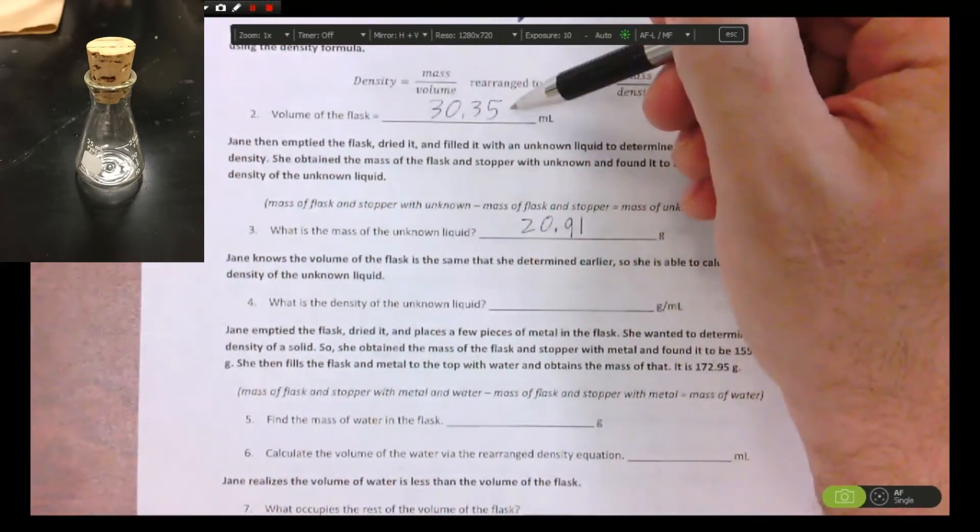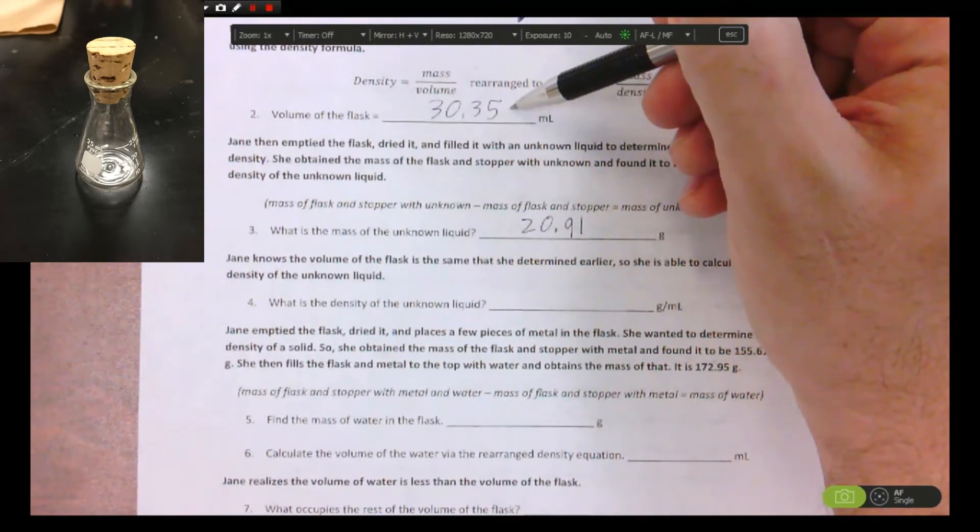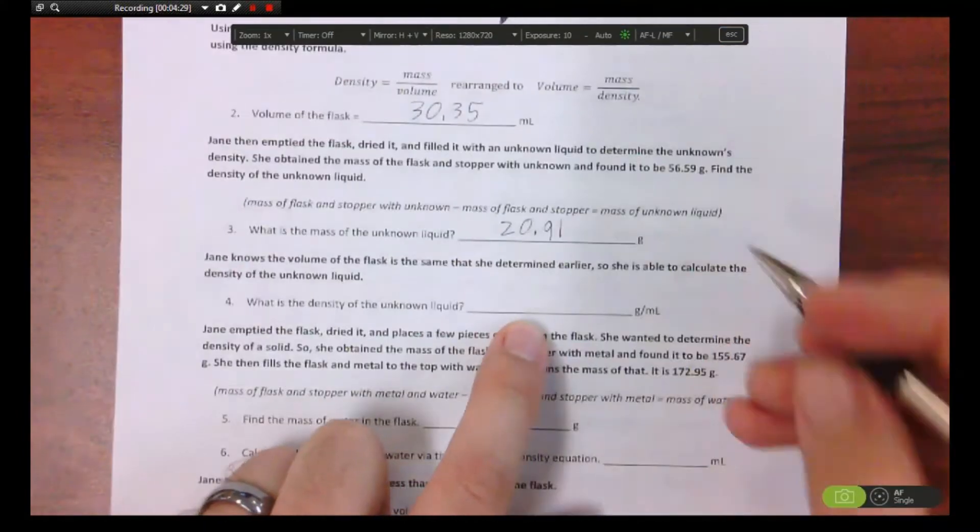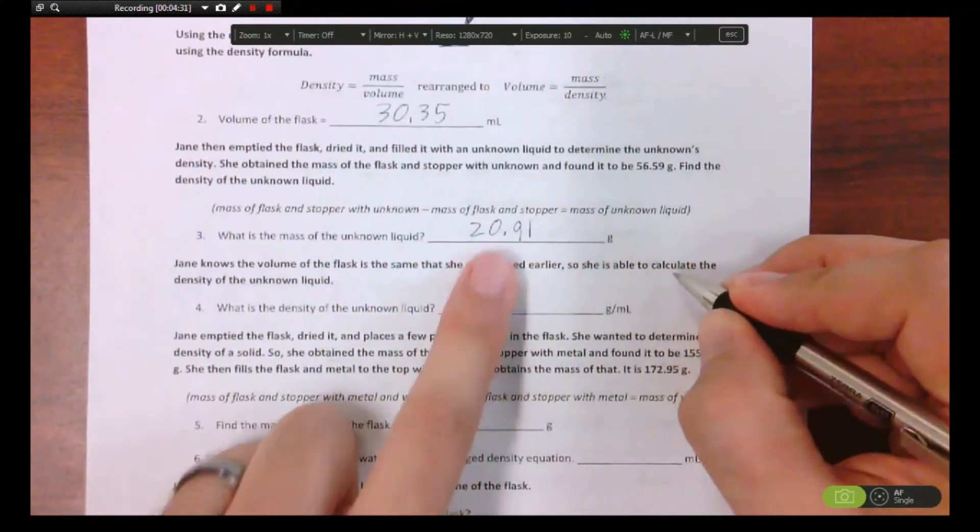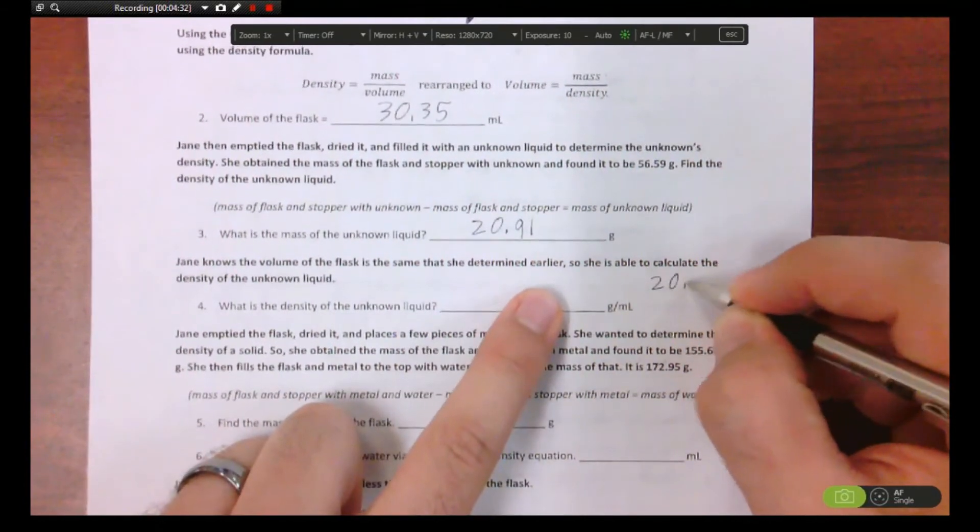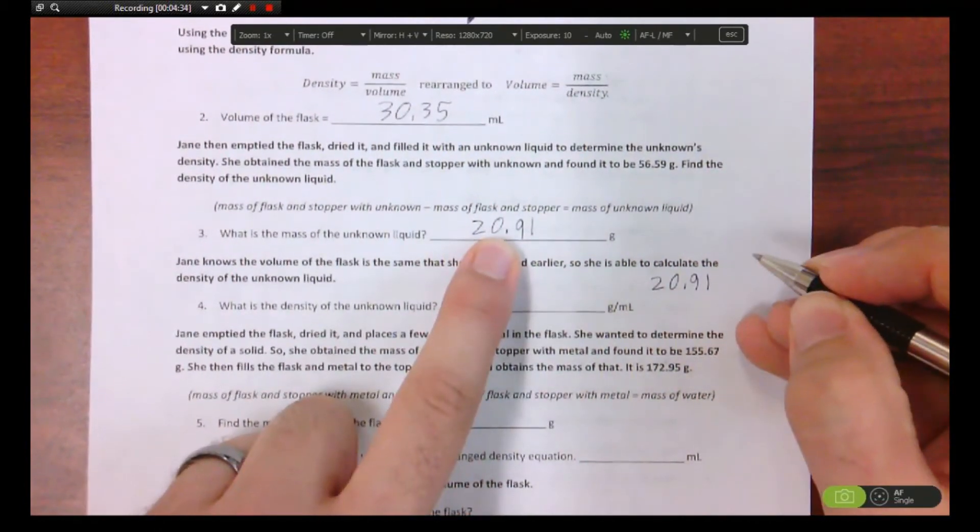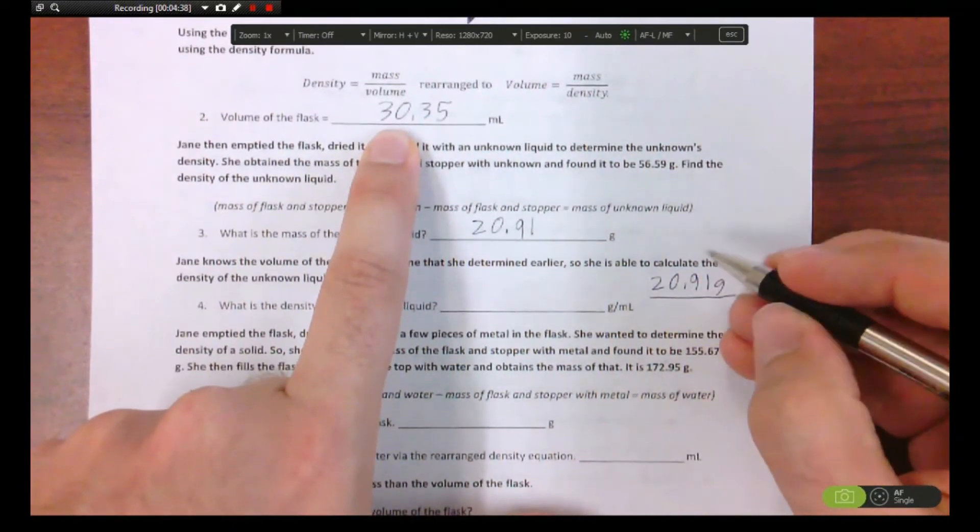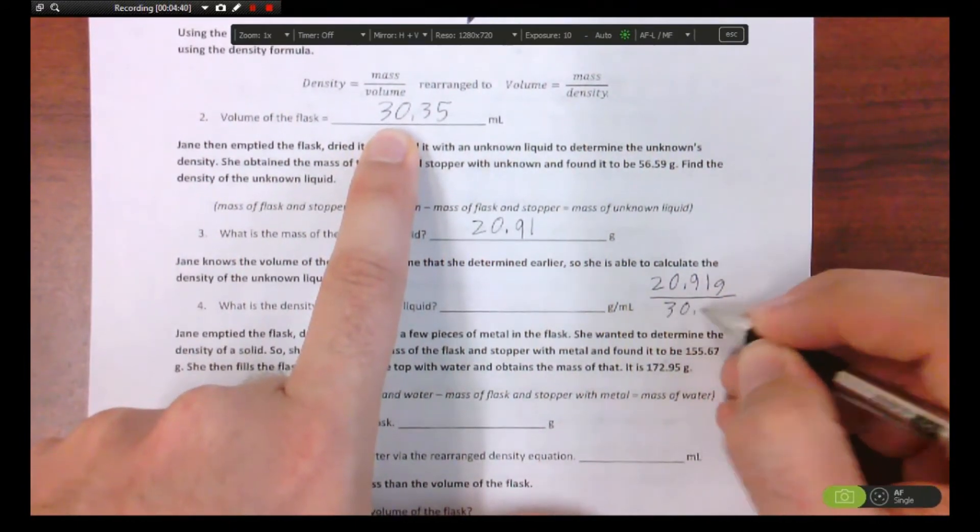Well, you've already found it number two. The volume of the flask was 30.35. Y'all see that? Oh, so you got to use your answers to actually answer another question, so it's like a puzzle. Yeah. So you have the mass which was the 20.91 that you got up here, and you also have the volume of the flask because she's using the same flask again, 30.35.